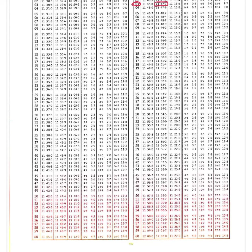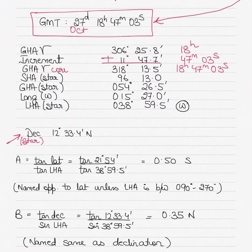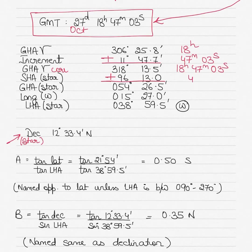I've shown you all the almanac values together so we don't go back and forth. Once we add the increment to the GHA Aries, we get GHA Aries corrected as 318° 13.5'. To this we add the SHA star — the SHA is always added. Adding 318° and 96° gives 414° 26.5' as the GHA star.